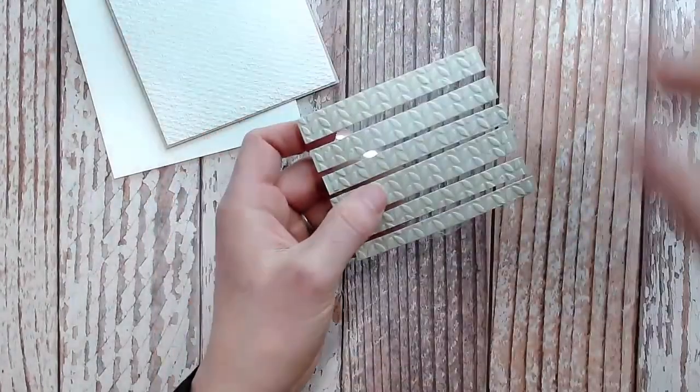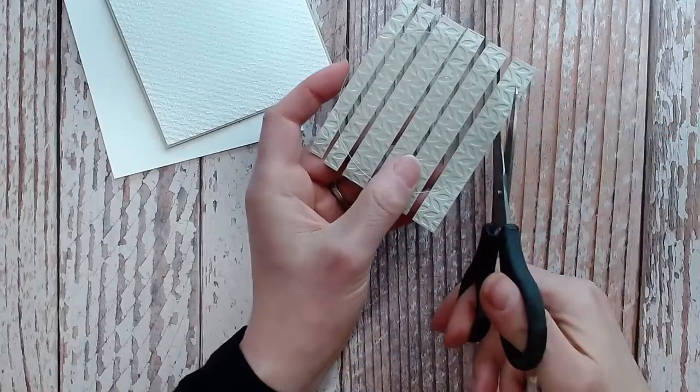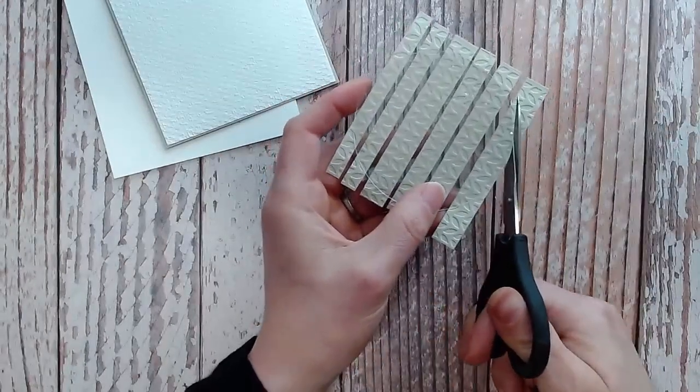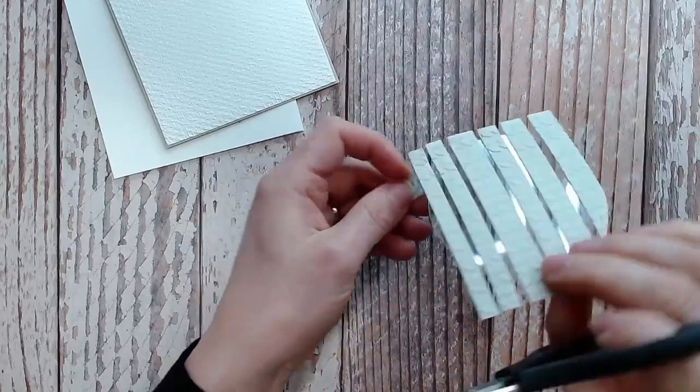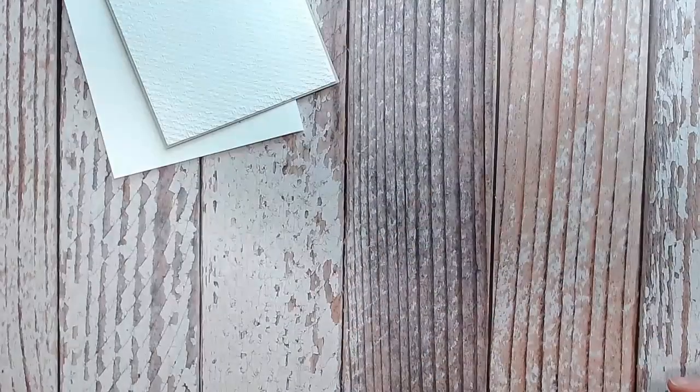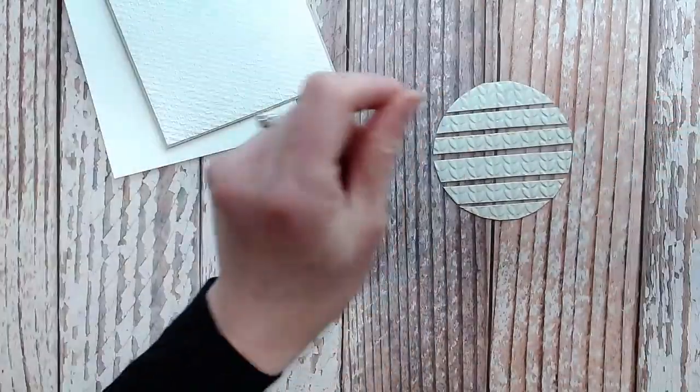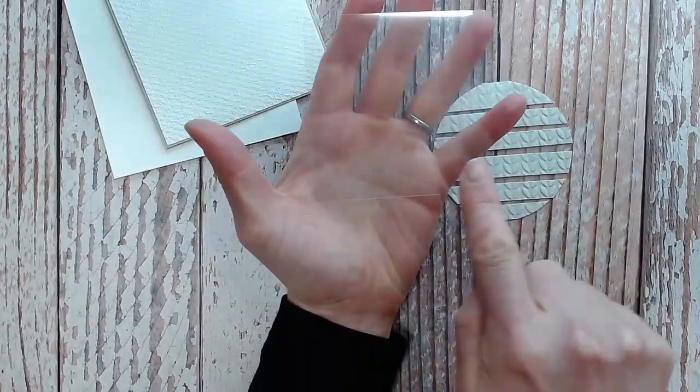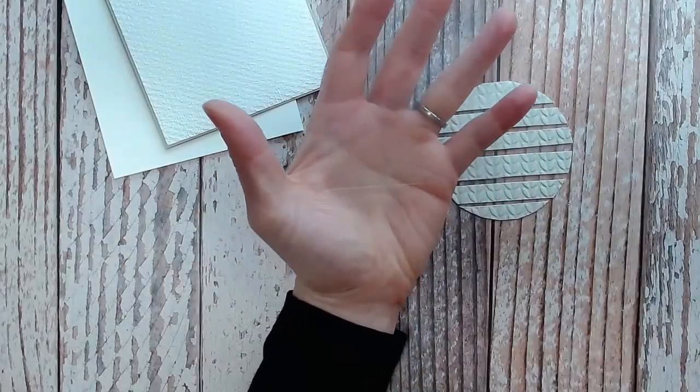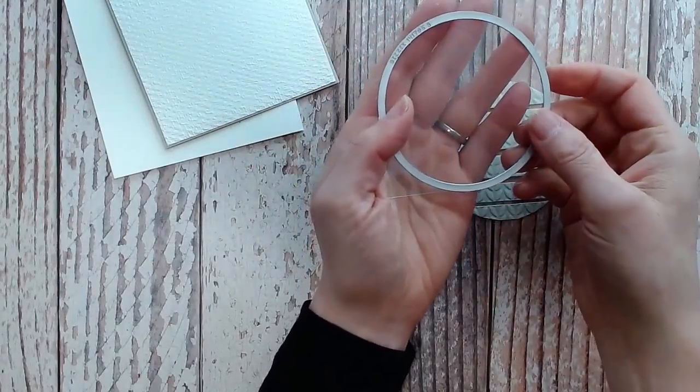Then what I would do is take scissors and go around here and just trim off to match the circle. I've got one that I've already done so I won't do that with you right now. You could also, as I mentioned earlier, just put your strips on the square and then after you've adhered them on, run them through with your die and then it's all perfectly matched and cut.